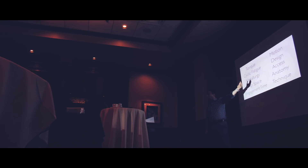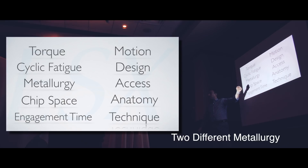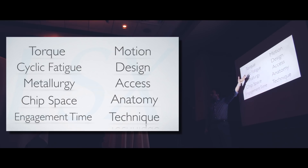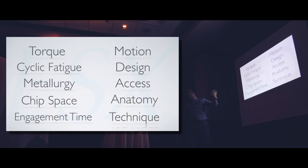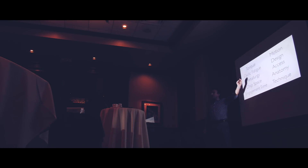Austenitic and martensitic files are two different metallurgical types, each excelling in different areas — torque resistance versus cyclic fatigue resistance. So here's an idea: hybridize instrumentation to get the best of both worlds. In areas requiring more torque resistance, use an austenitic file; in areas with more curvature or advanced canal anatomy, use a heat-treated martensitic file.